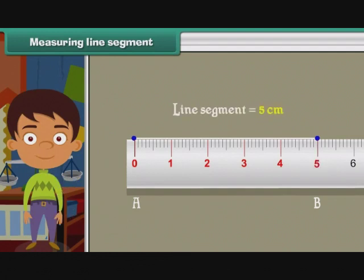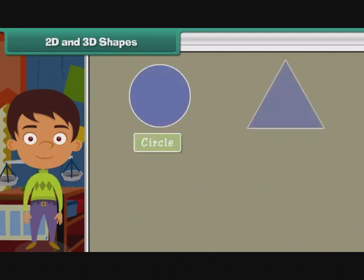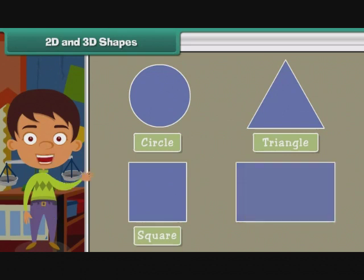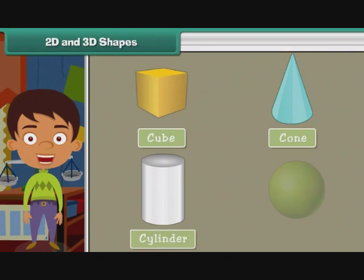2D and 3D shapes. Now let us talk about two-dimensional or 2D shapes. Some 2D shapes are circle, triangle, square, and rectangle. Some three-dimensional or 3D shapes are cube, cone, cylinder, and sphere.